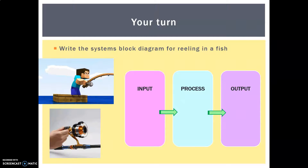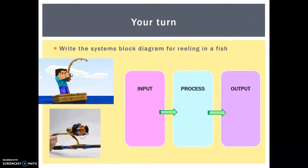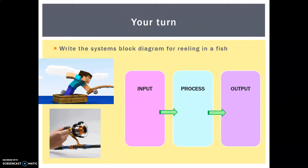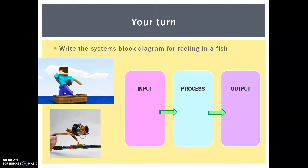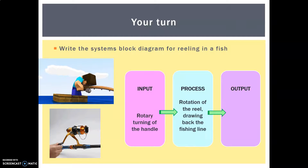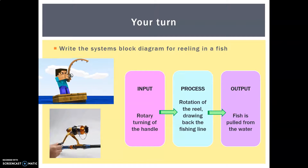Now it's time for you to have a go. I'd like you to write a block diagram — input, process, and output — for reeling in a fish. It's not supposed to be complicated, don't overthink it. Welcome back. Hopefully you can see Steve furiously turning the handle of his reel, which is causing the reel to rotate and drawing back the fishing line. The output is hopefully pulling the fish from the water.